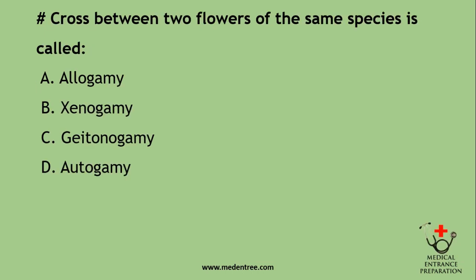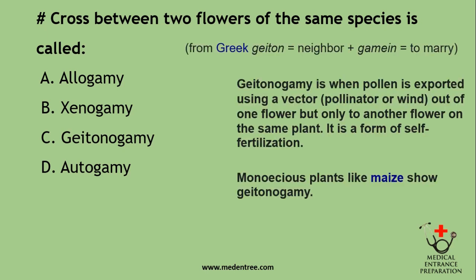Cross between two flowers of the same species is called: Allogamy, Xenogamy, Geitonogamy, or Autogamy? From Greek, 'geiton' means neighbor and 'gamein' means to marry. Geitonogamy is when pollen is exported using a vector, pollinator, or wind out of one flower, but only to another flower on the same plant. It is a form of self-fertilization. Monoecious plants like maize show geitonogamy.